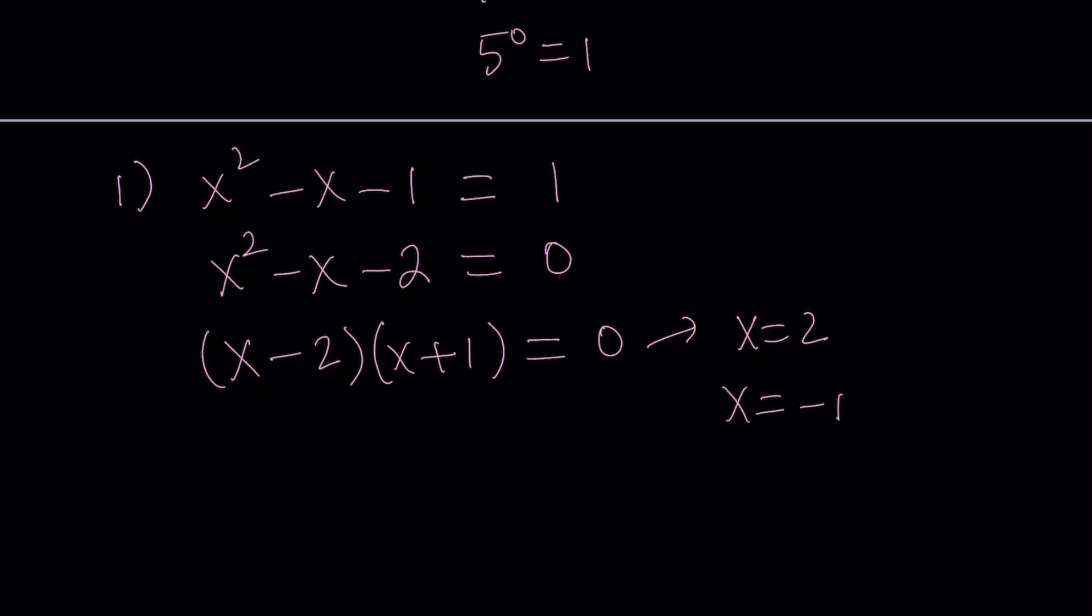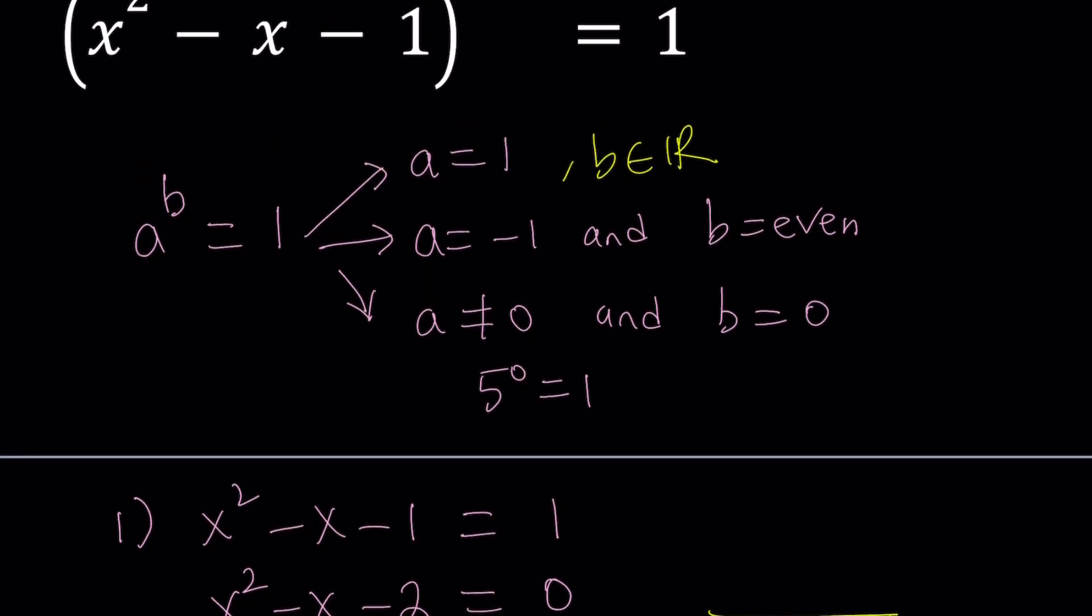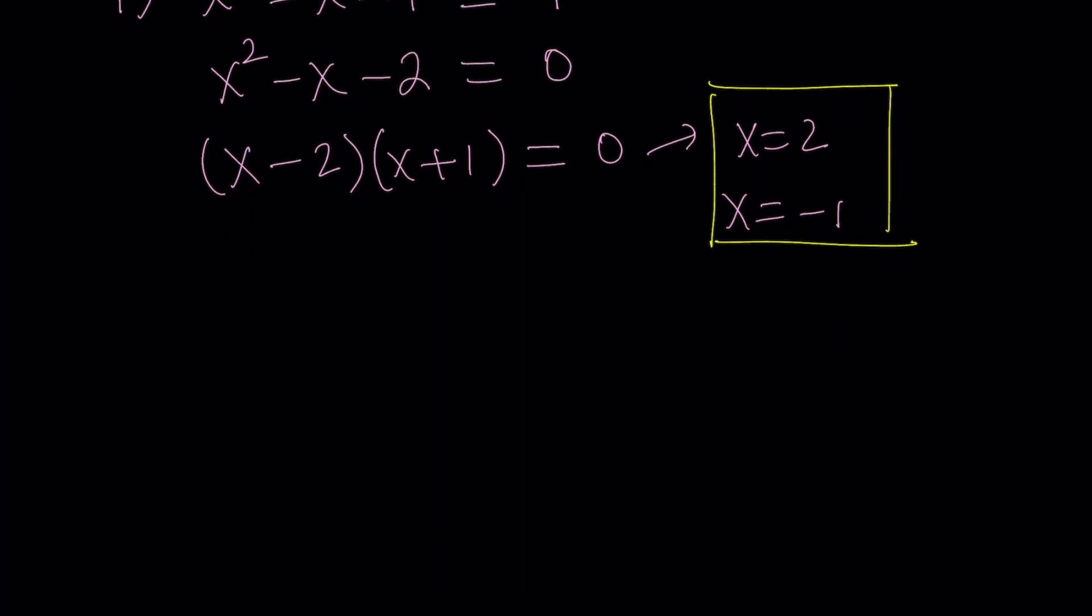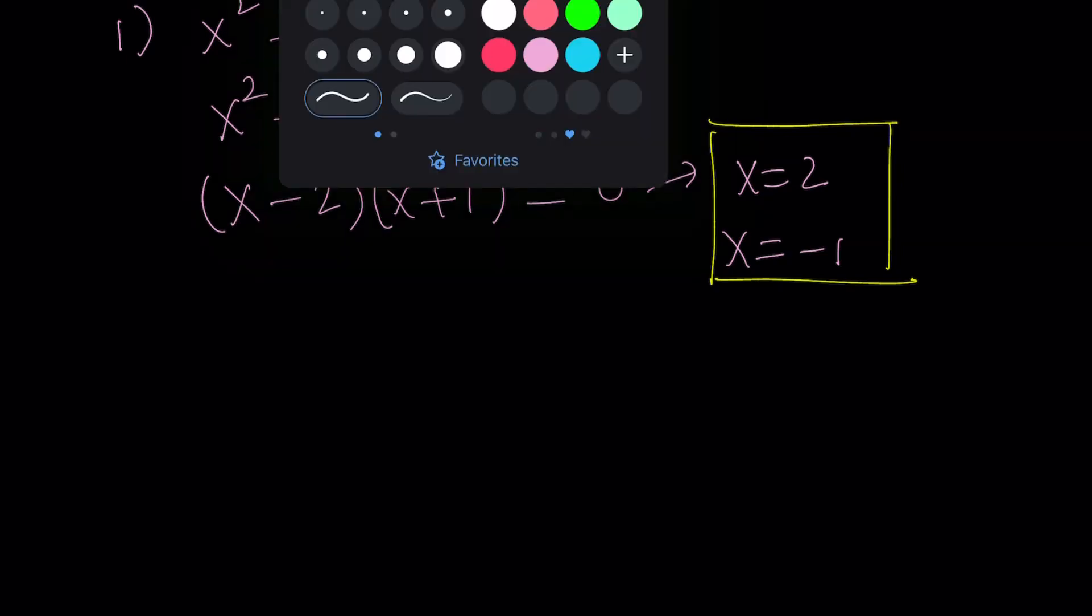From here, we get the x values. x is equal to 2 or x is equal to negative 1. So we got two solutions. Let's go ahead and save them for now. Since we said that when the base is equal to 1, b can be anything, b is basically any real number, then we don't really care about what the exponent is going to be. So those are the two solutions, but at the end, we have to check everything. Let's go ahead and continue with the second case.